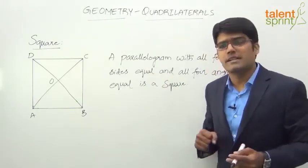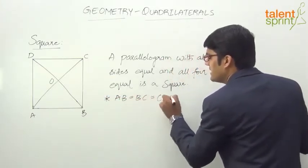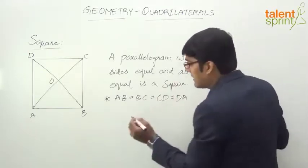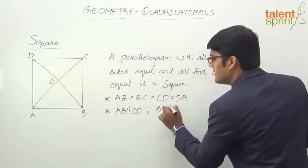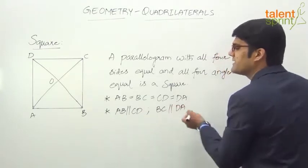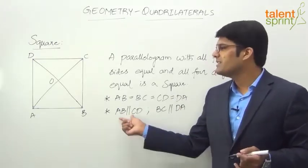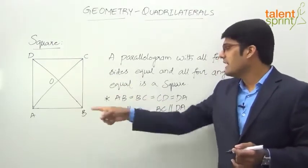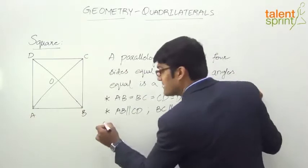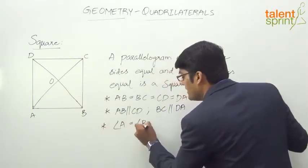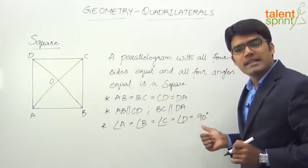Now it will be very easy for us to understand the properties. All four sides are equal: AB equals BC equals CD equals DA. The opposite sides are parallel, so AB is parallel to CD and BC is parallel to DA. This is the basic property of a parallelogram — opposite sides have to be parallel. For angles, all four angles are equal: angle A equals angle B equals angle C equals angle D, each equal to 90 degrees.